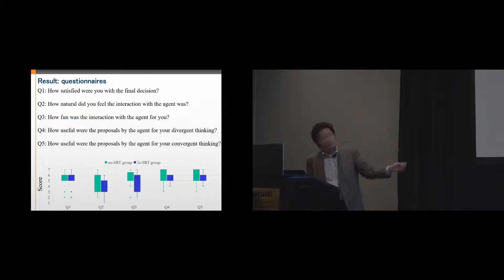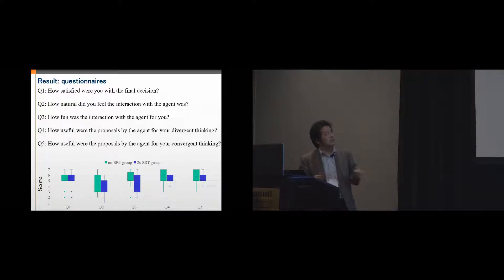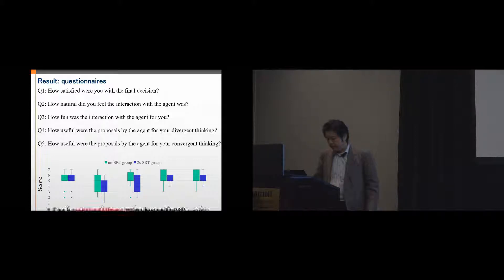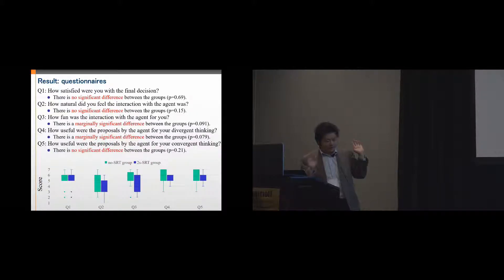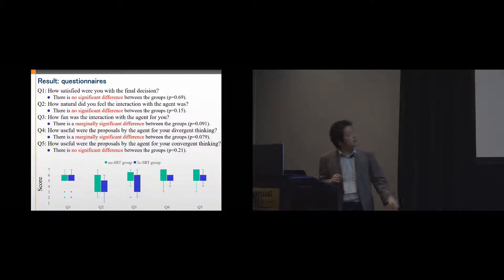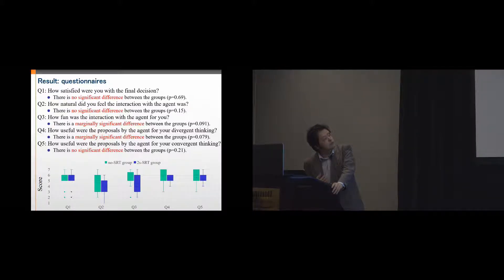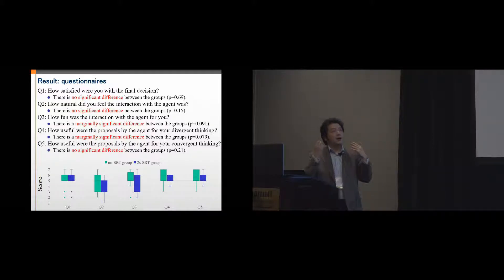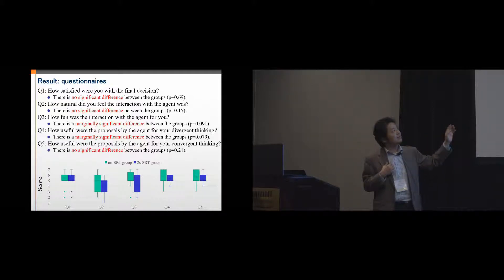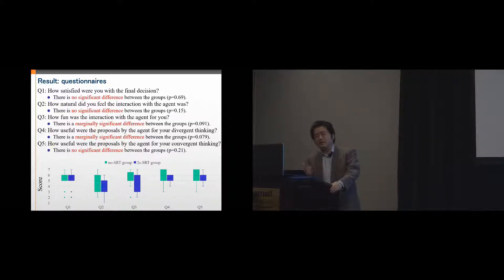Finally, we asked questionnaire questions about participants' impressions of the agent and the interaction — how satisfied, how natural, how fun, how useful, and so on. We could not find significant differences in all of them. Questions three and four showed marginally significant differences, but not strongly. In both groups, participants did not feel unnaturalness and were satisfied with the agent's proposals.